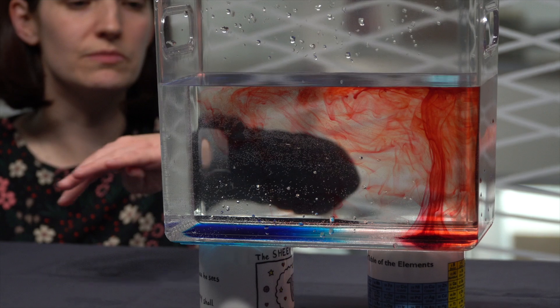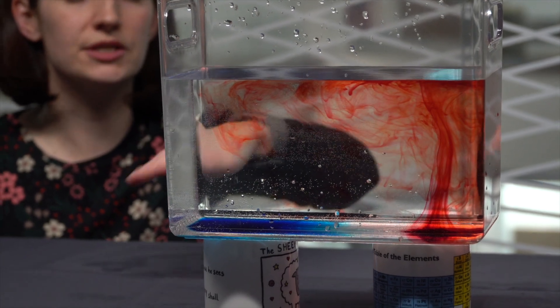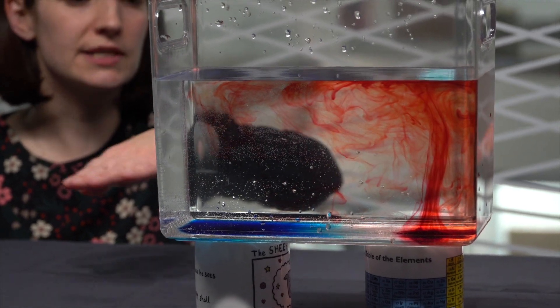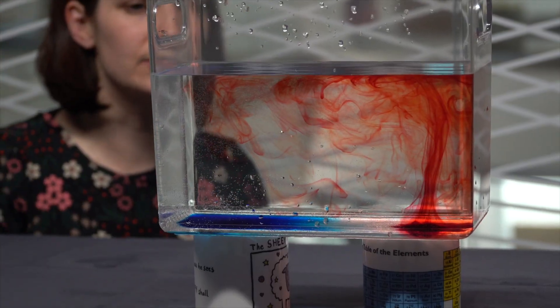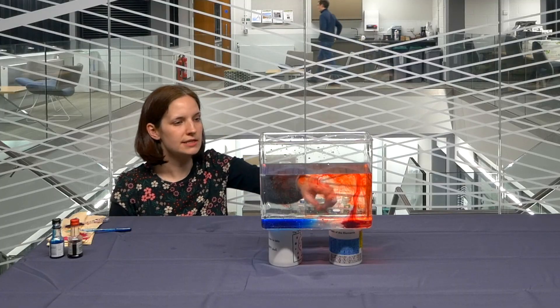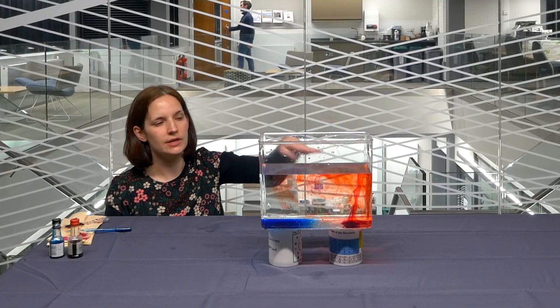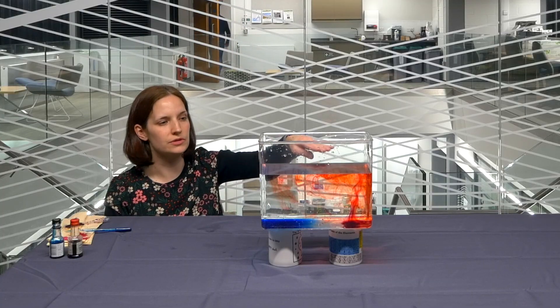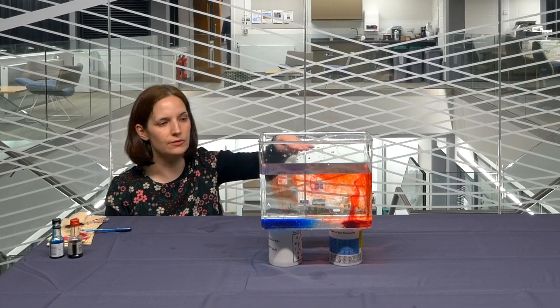We've got water moving towards the area of low pressure, from high to low. That's why we're starting to see the blue spread out along the bottom. As the red dye moves up towards the top and spreads out, it's starting to cool down. That hot water is cooling all the time as it's moving through the tank.